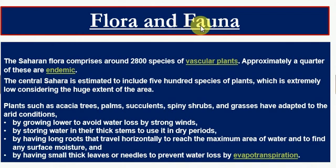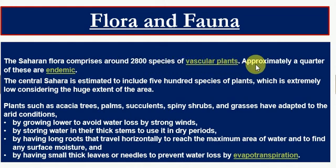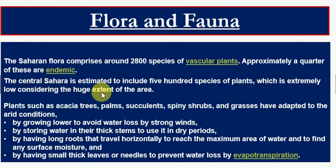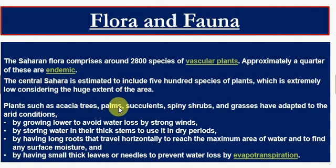Flora and Fauna of Sahara Desert. The Sahara flora comprises around 2800 species of vascular plants. Approximately a quarter of these are endemic. The Central Sahara is estimated to include 500 species of plants, which is extremely low considering the huge extent of the area. Plants such as acacia trees, palms, succulents,